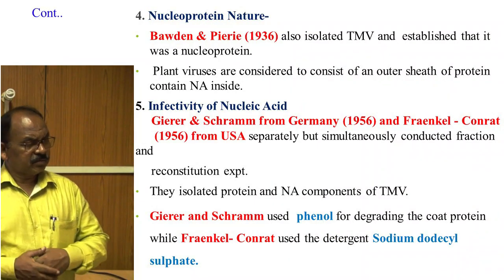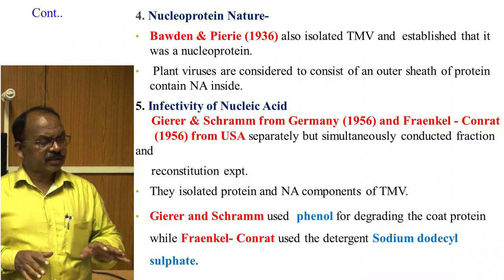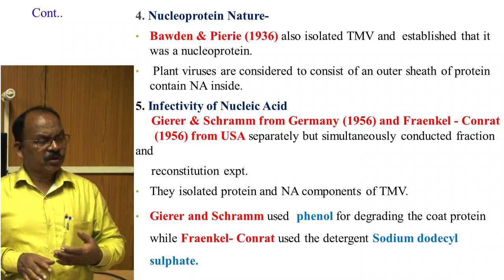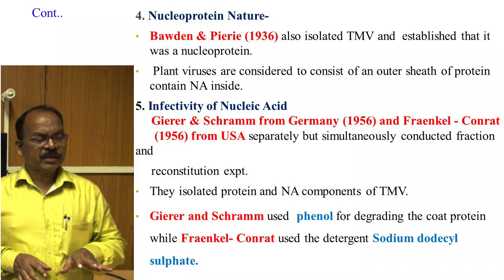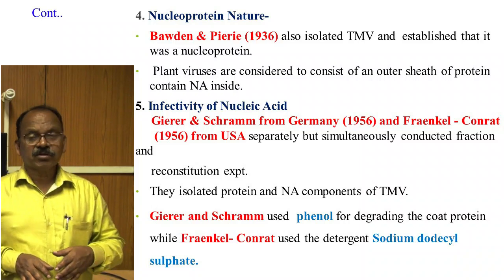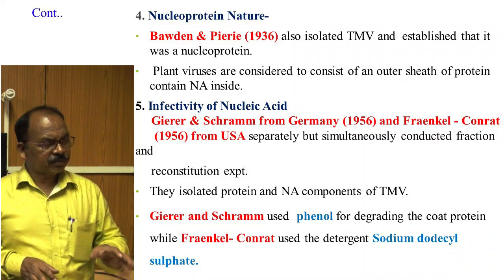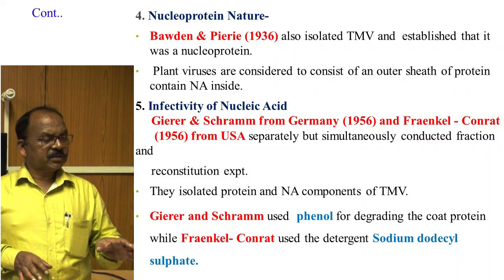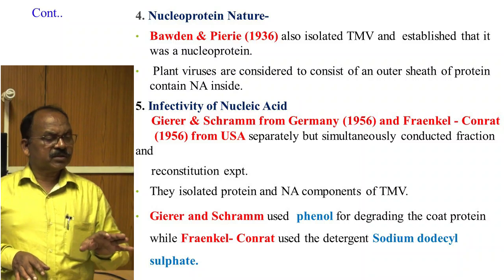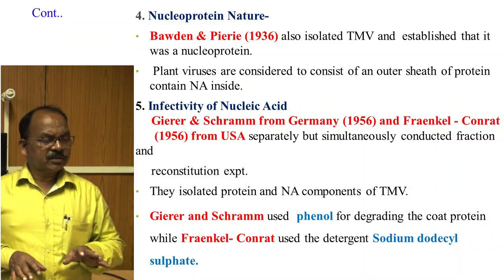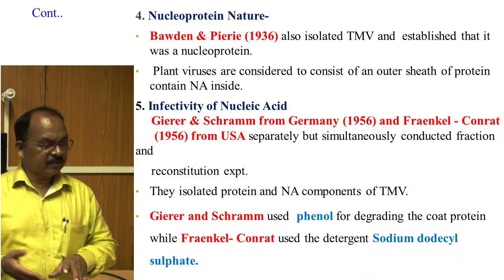Regarding nucleoprotein nature: Bawden and Pirie in 1936 also isolated Tobacco Mosaic Virus and established that it was a nucleoprotein — meaning nucleic acid within protein. Plant viruses are considered to consist of an outer sheath of protein containing nucleic acid inside.